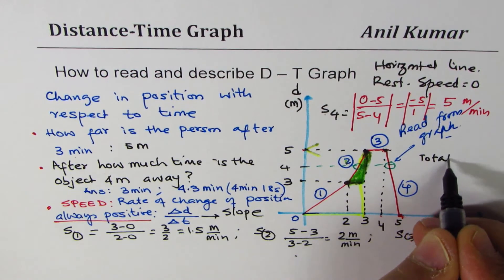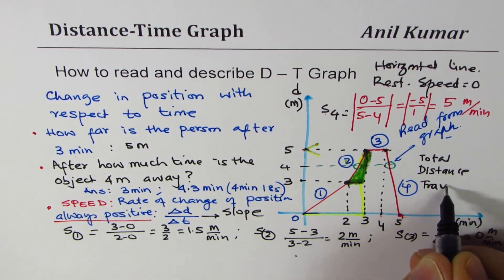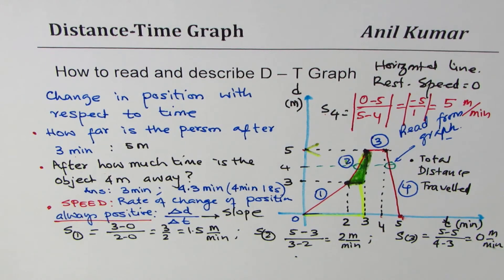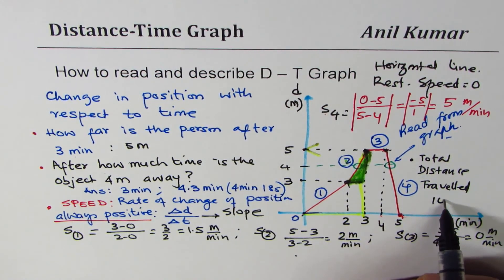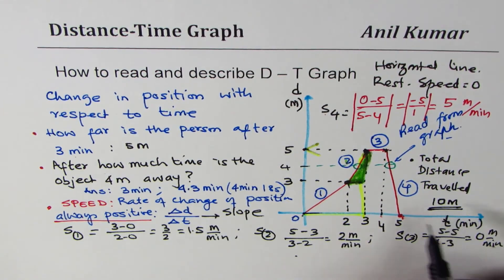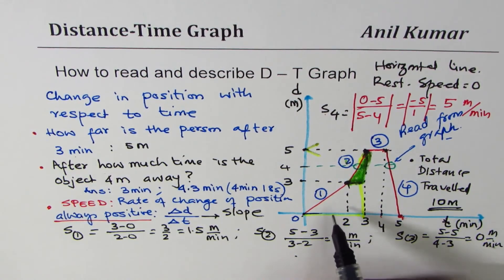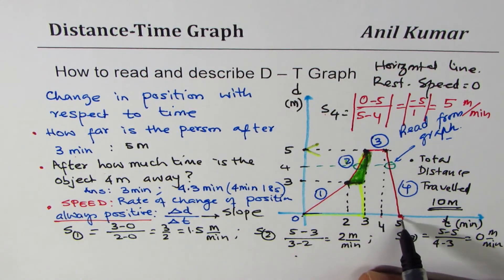The question for you: can you find the total distance traveled? Pause the video and find this. The total distance traveled — the person went 5 meters away and returned 5 meters, so the total is 10 meters. Count all distances and add them up.